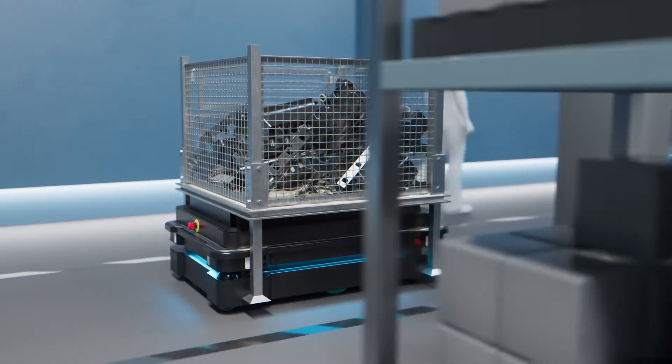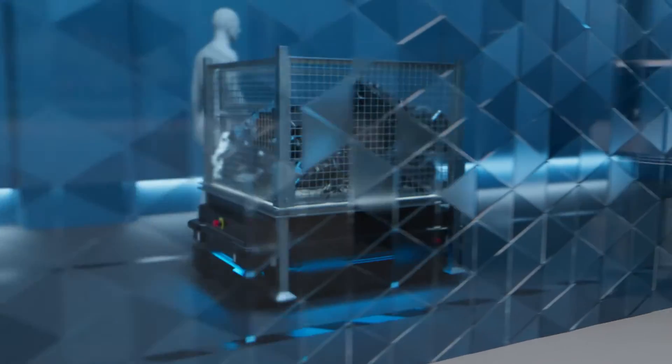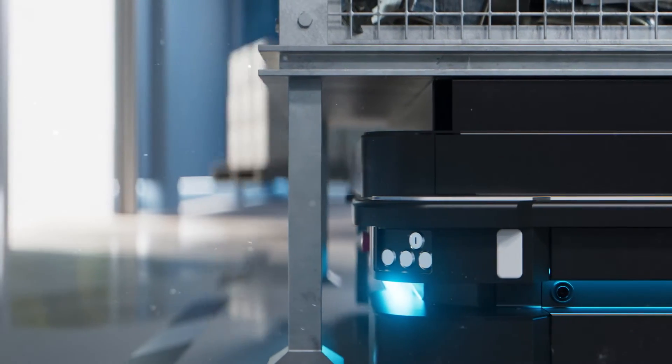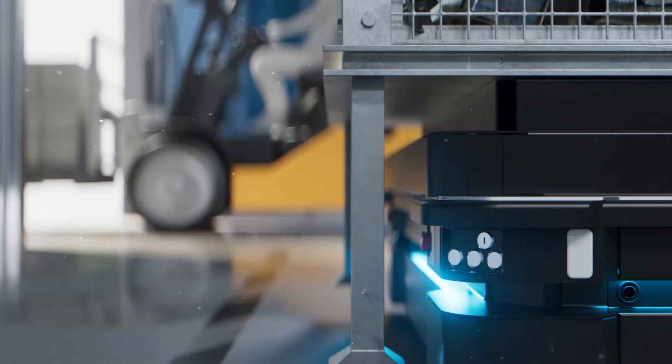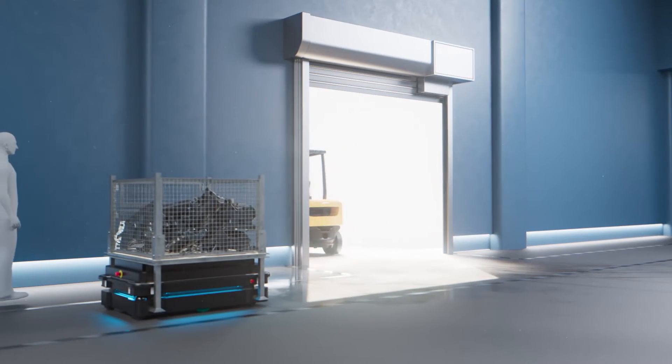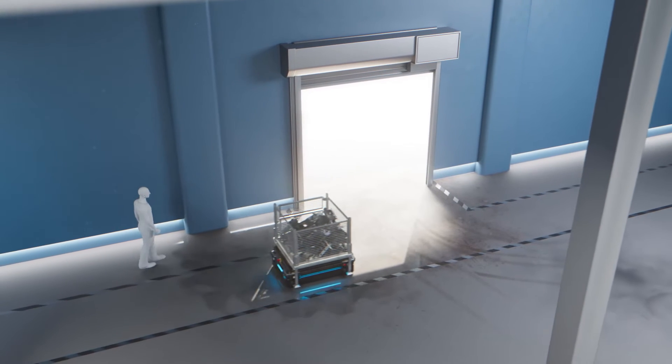The MiR 600 and MiR 1350 are designed to work within a wide range of applications and environments. Whether you need to optimize internal logistics in your core production, raw material storage, or your inbound and outbound logistics, the MiR industry-grade-proven robots are your solution.